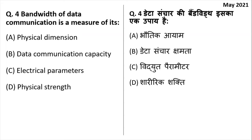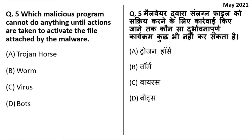Bandwidth of data communication is a measure of its data communication capacity. We say Gbps — gigabytes per second. These are data communication capacities which represent the bandwidth of data.